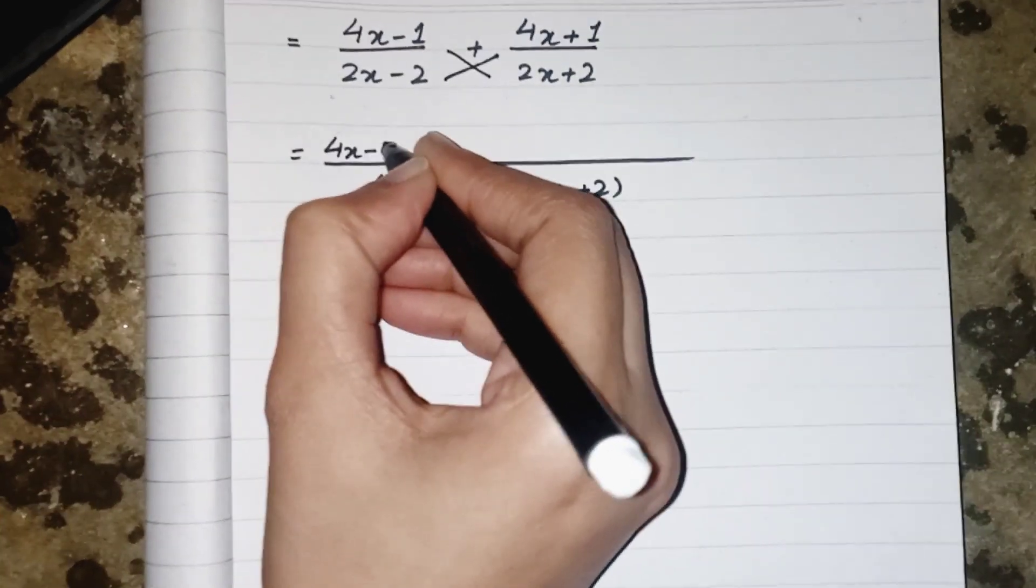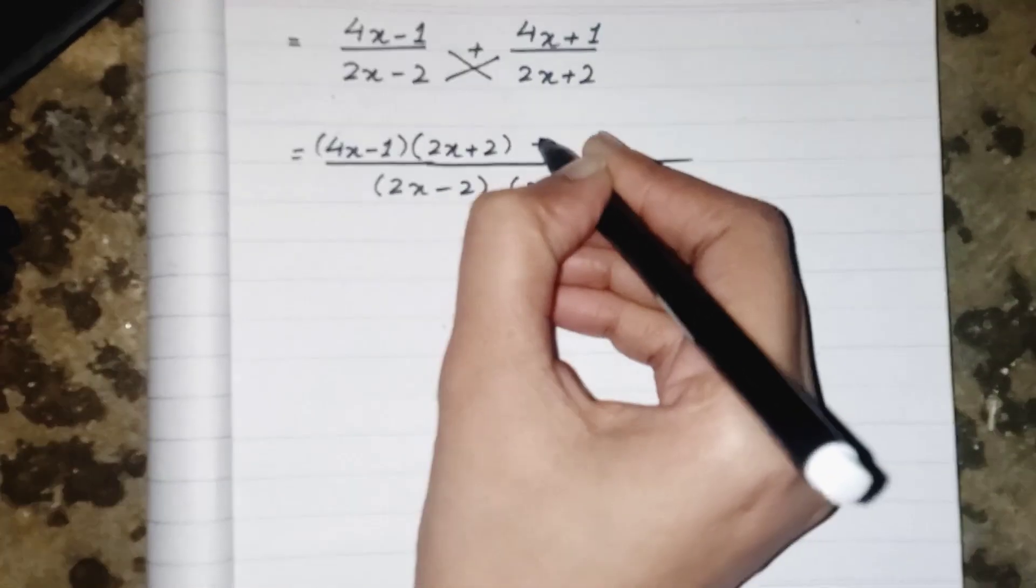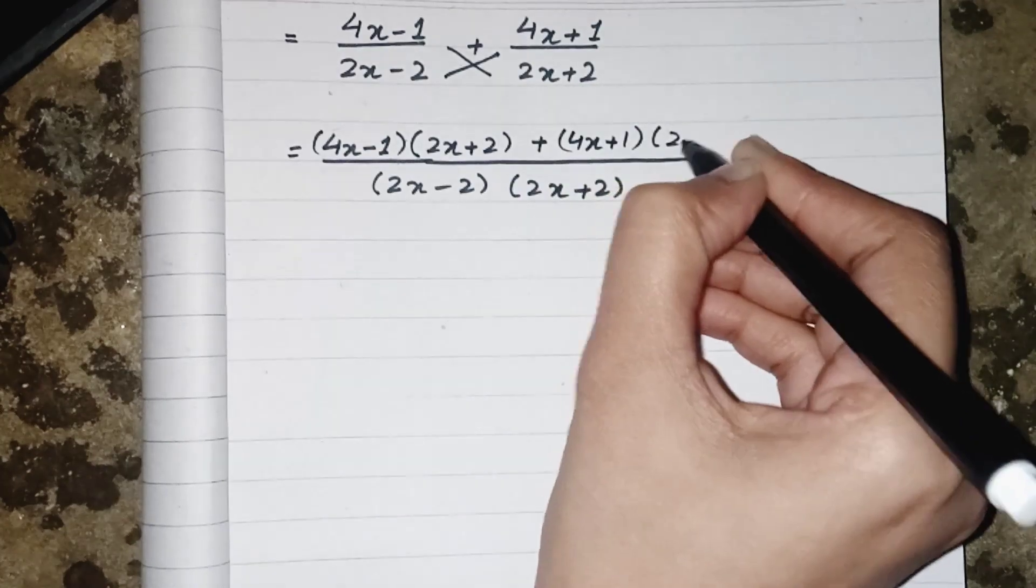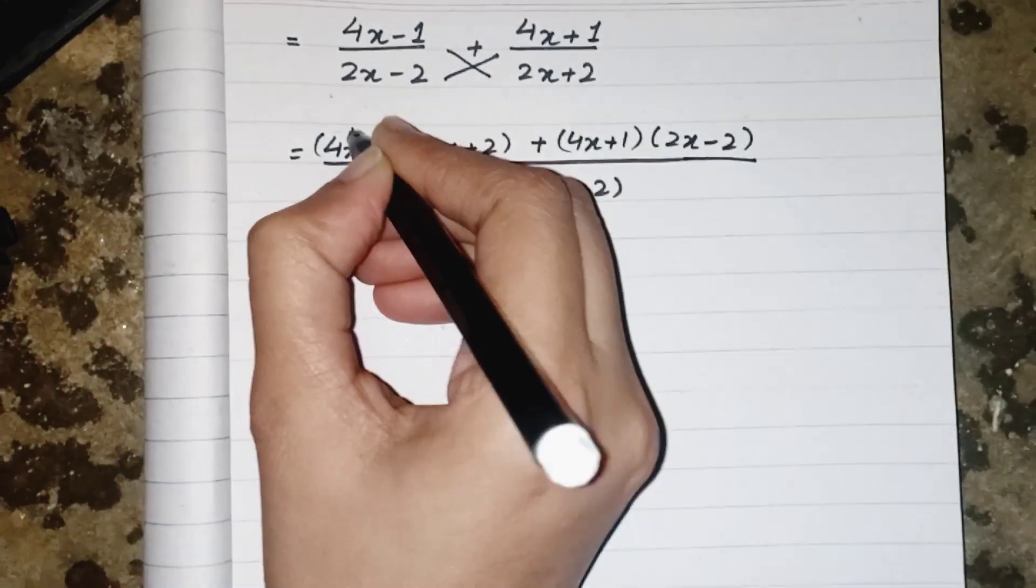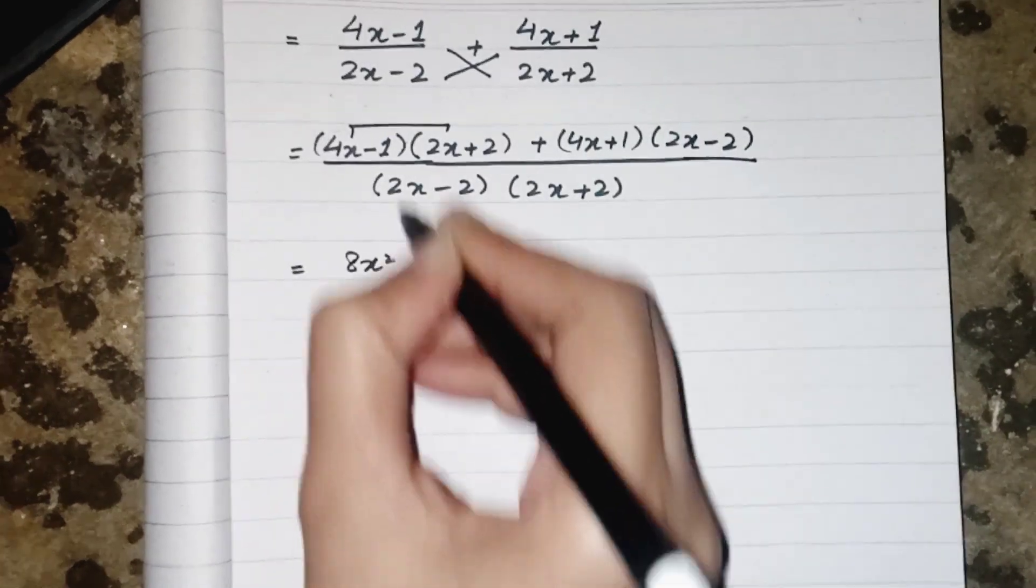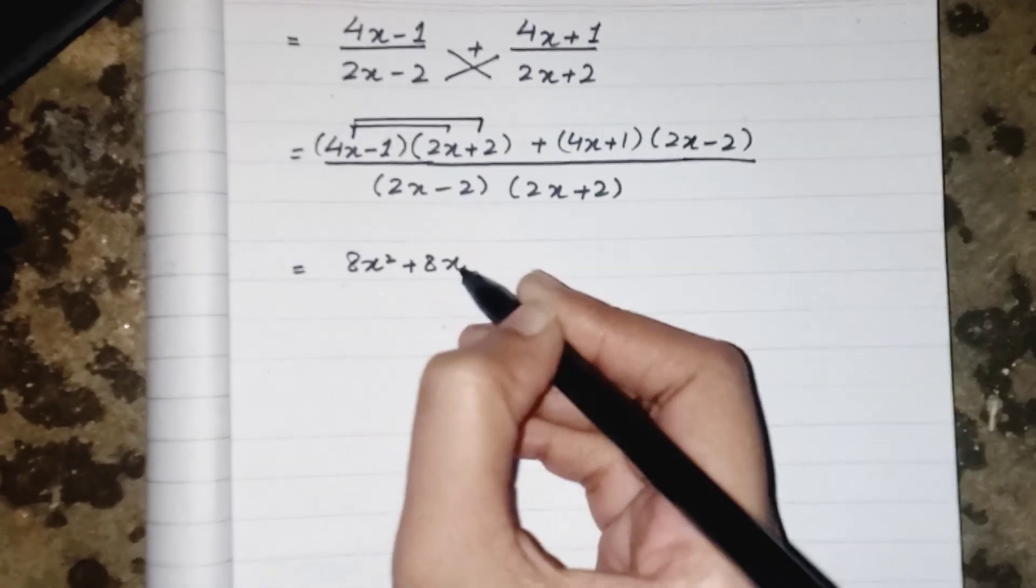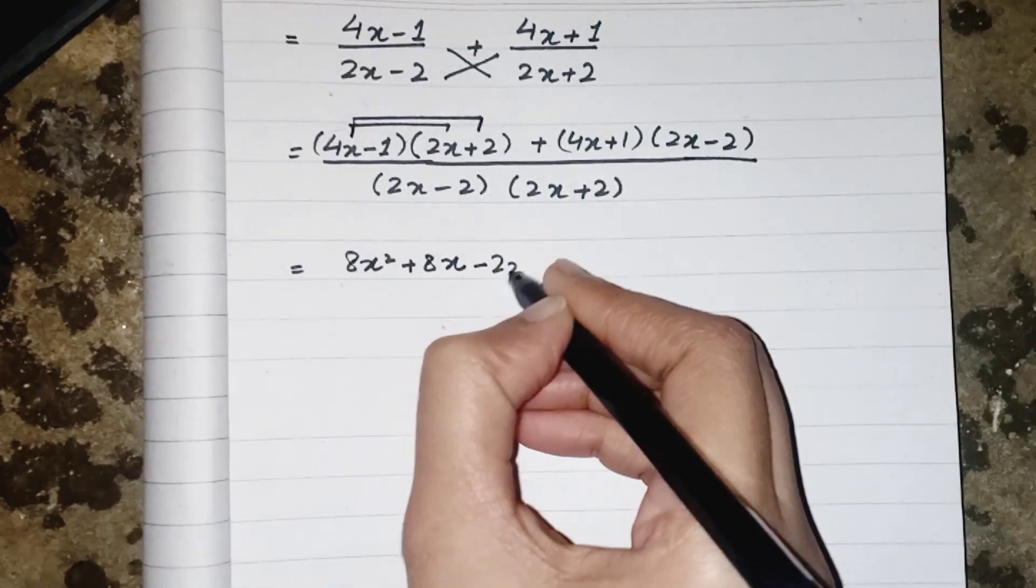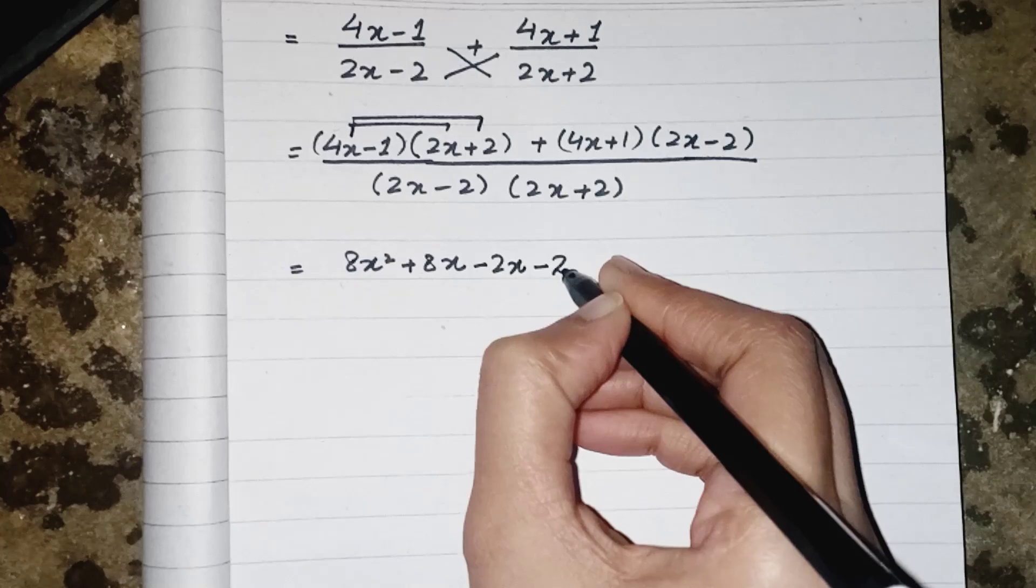4x minus 1 should be multiplied by 2x plus 2 and 4x plus 1 should be multiplied by 2x minus 2. When 4x multiplied by 2x, it will give us 8x squared. Similarly, 4x multiplied by 2 will give us 8x. Minus 1 multiplied by 2x minus 2x, minus 1 multiplied by plus 2 will give us minus 2.